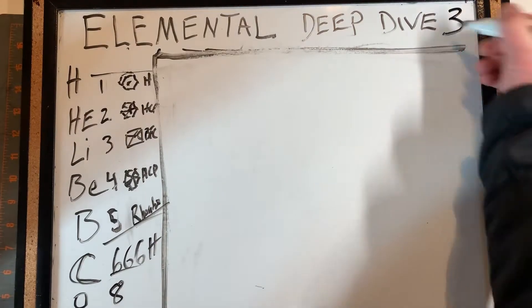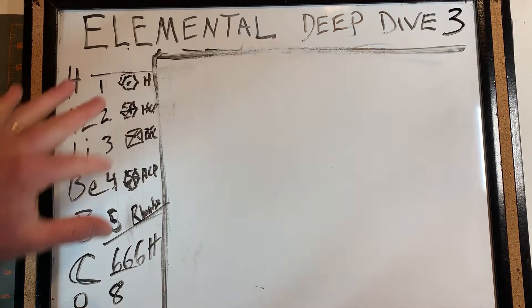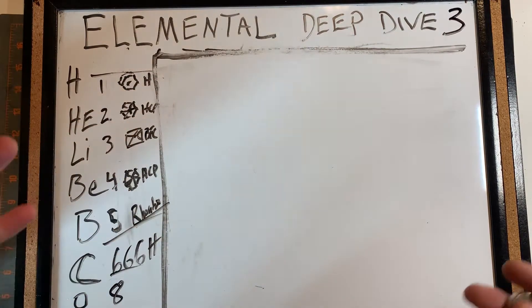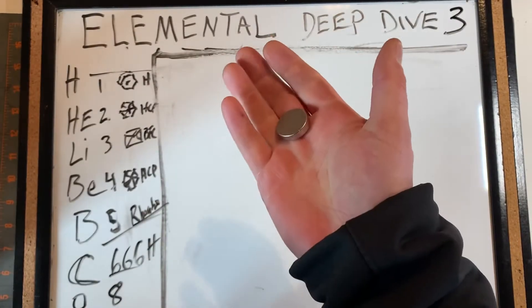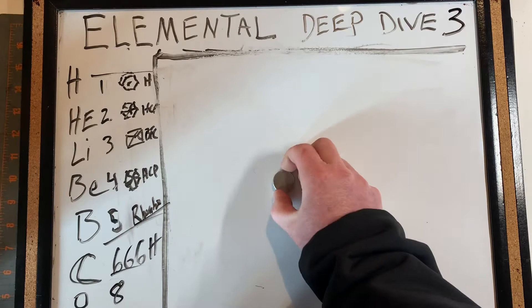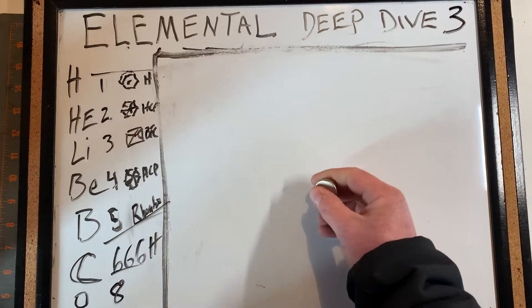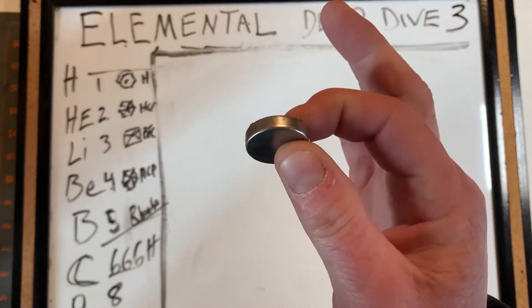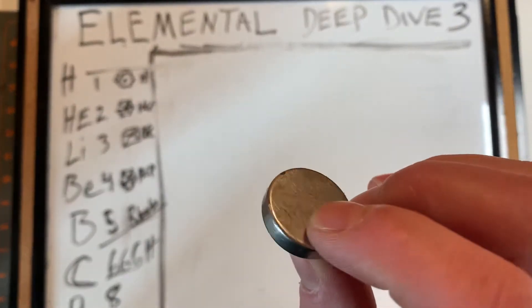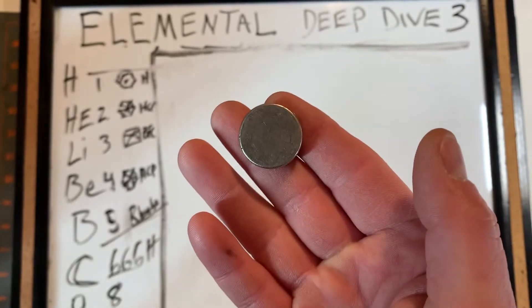All right, part three — this is the last part of the elemental deep dive. I wanted to show how we could visualize this in the real world. Here is element number 60: it's a neodymium magnet. Go look up the periodic table and look at the structure of it.